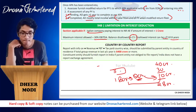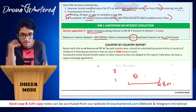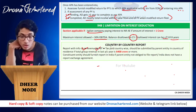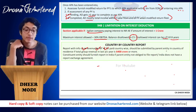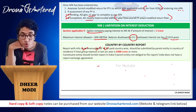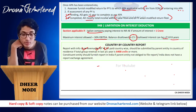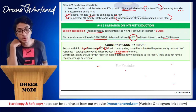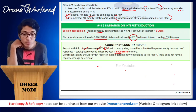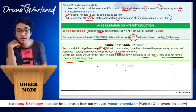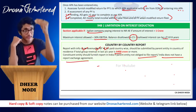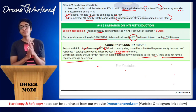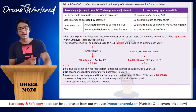The Country-by-Country (CbC) report must be submitted by the parent entity in its country of residence if the total group revenue in the previous year is 6,400 crores or more. The report contains country-wise information on revenue, profit before tax, and tax paid. If the parent entity is not obliged to file the report, or if India does not have a report exchange agreement with that country, the constituent entity (a subsidiary-level entity) must furnish the report in India.